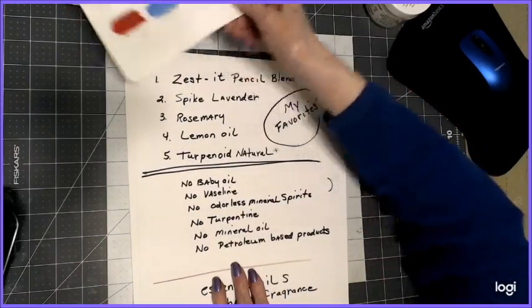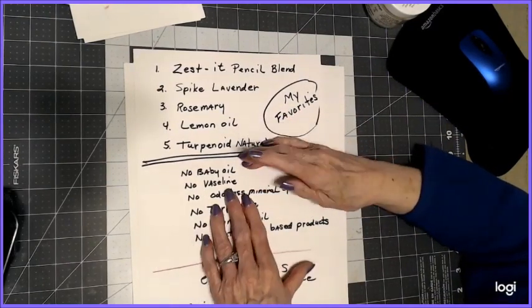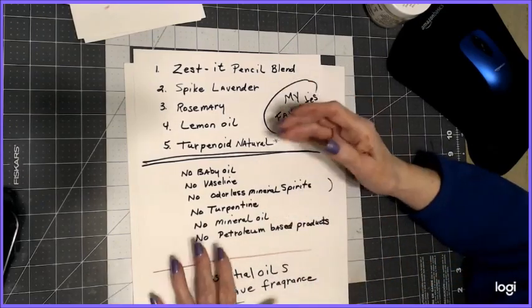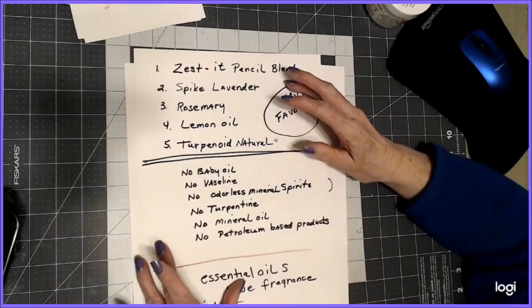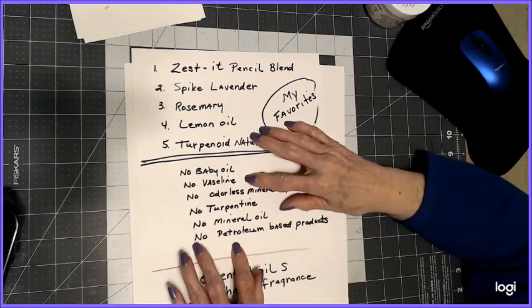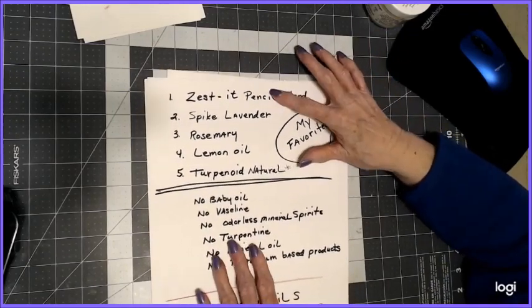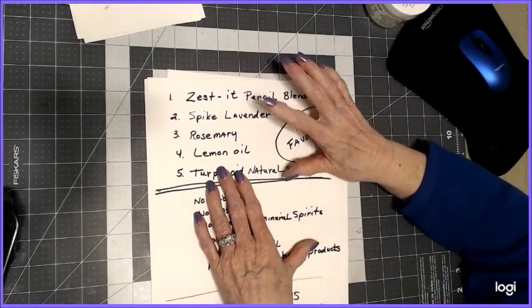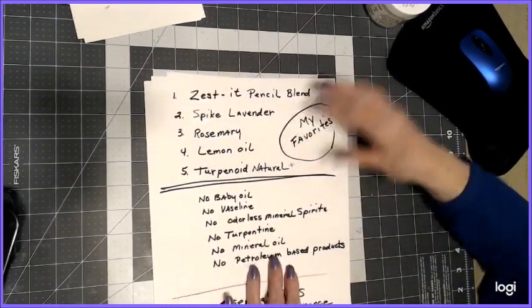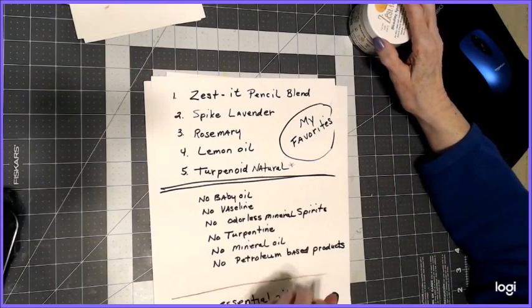Moving on, for me, I will not use baby oil, I'm not going to use Vaseline. These are petroleum-based oils that do not dry and can potentially damage your coloring book. Odorless mineral spirits, I'm not going to be using that anymore, or turpentine. No mineral oil, which is what baby oil is, and no petroleum-based products. I'm left with Zest-It or these essential oils - spike lavender, rosemary, lemon, or the terpenoid natural. For me right now, I'm really happy with the effect I can get on blending with the Zest-It.